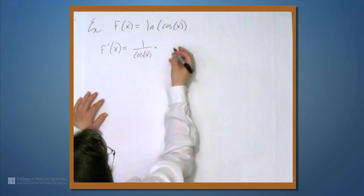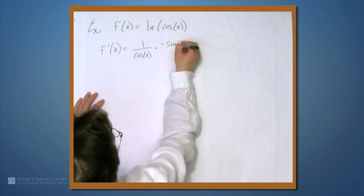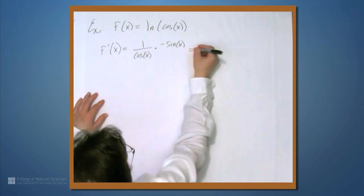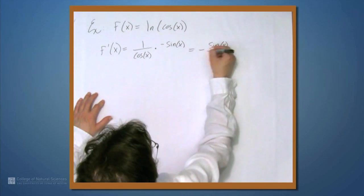Times, by the chain rule, the derivative of cos x, which is negative sin x. So this is negative sin x over cos x.